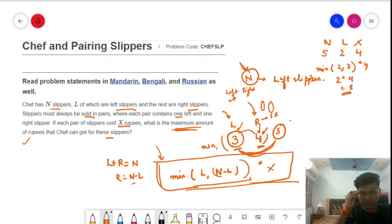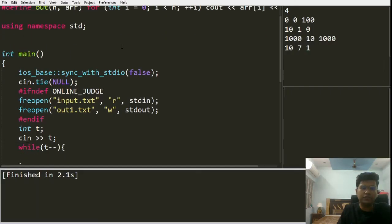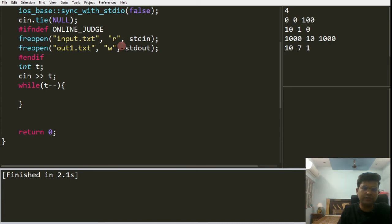Now let's see how we can code this particular solution in C++. The code of this solution in C++ is quite easy. We can first enter the test cases that we have, and for each test case we'll enter three values: N, L, and X. We'll input these values N, L, and X.